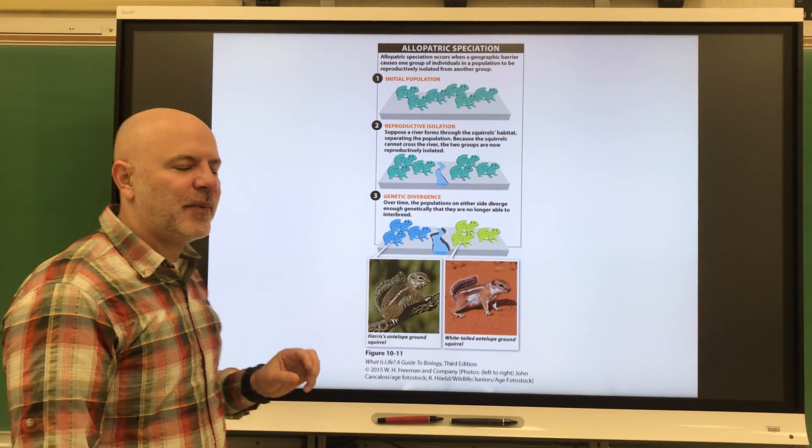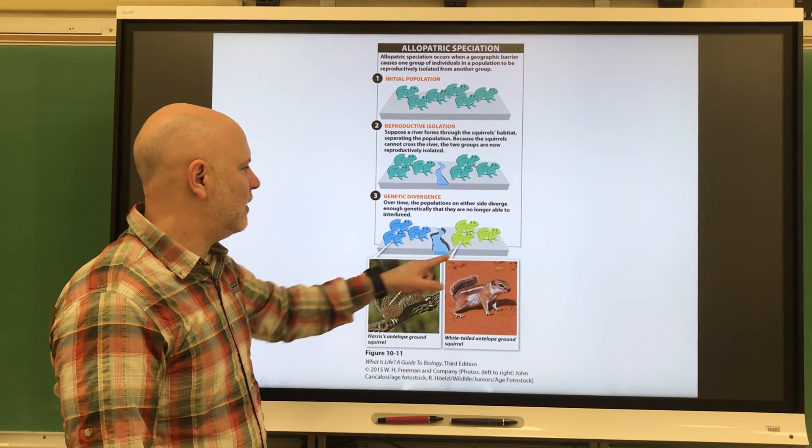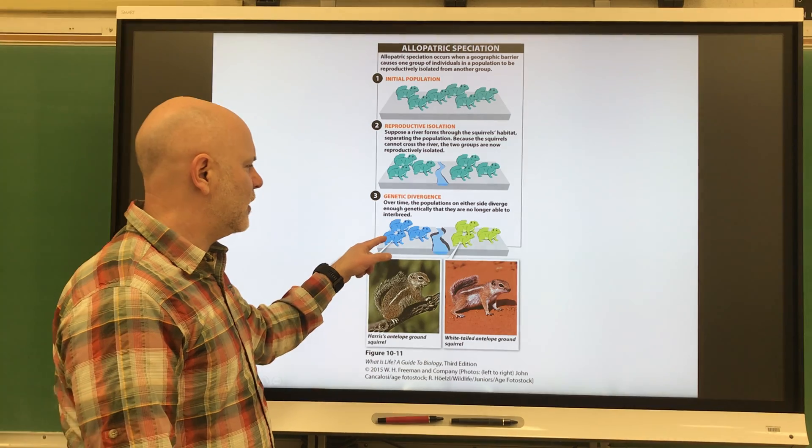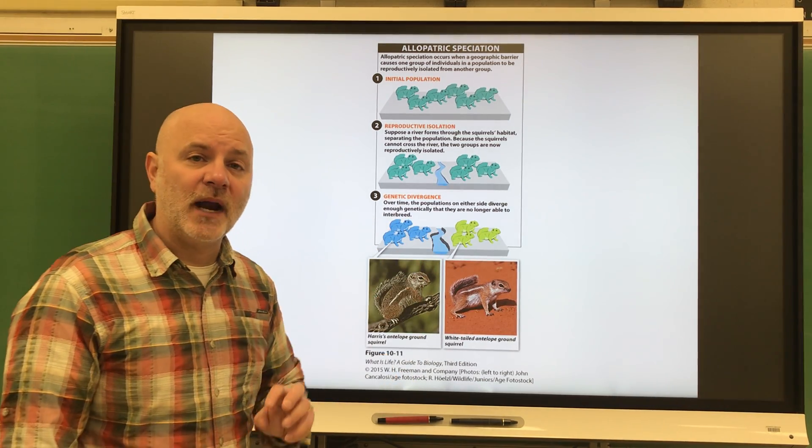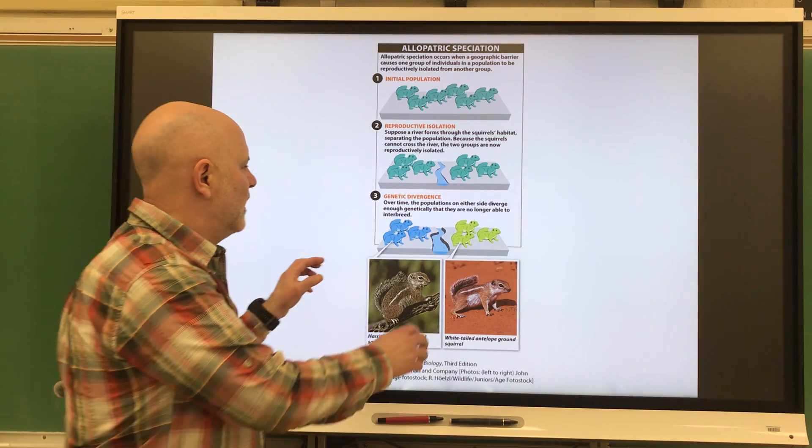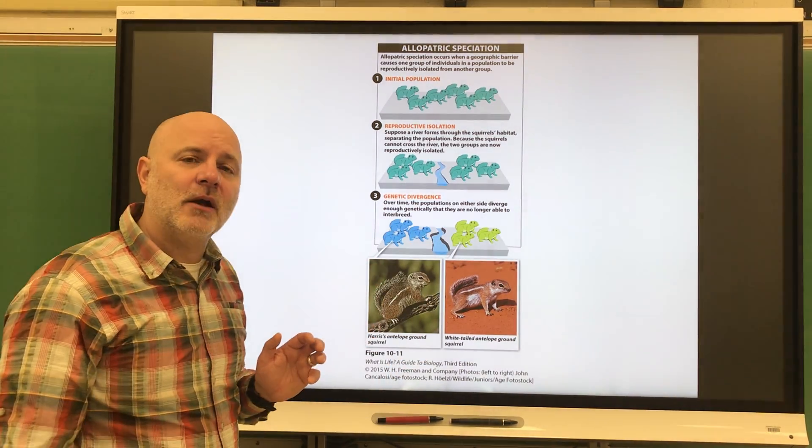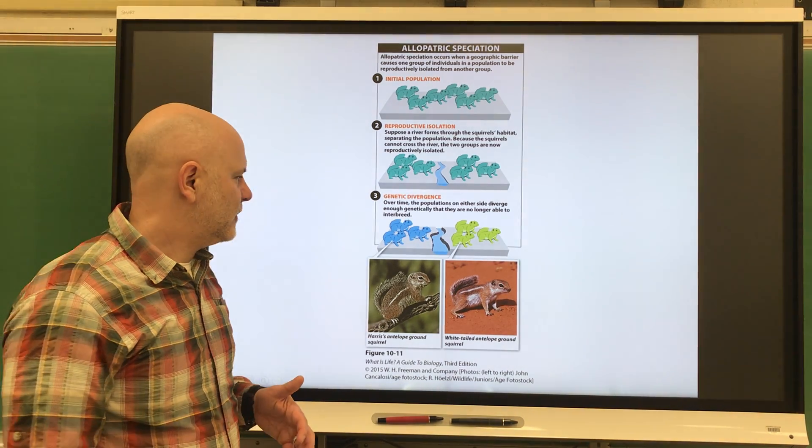What's going to happen with those different populations is mutations are going to occur here that aren't going to occur there, and vice versa. They're also going to evolve to their local environments. So even if this river were to go away and these populations were to intermingle again, they would now be reproductively isolated from each other.